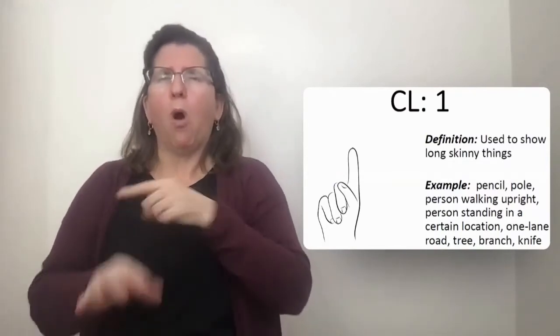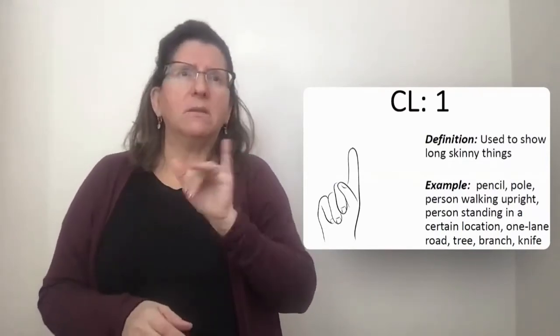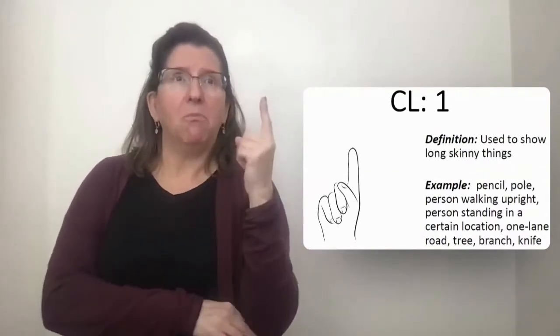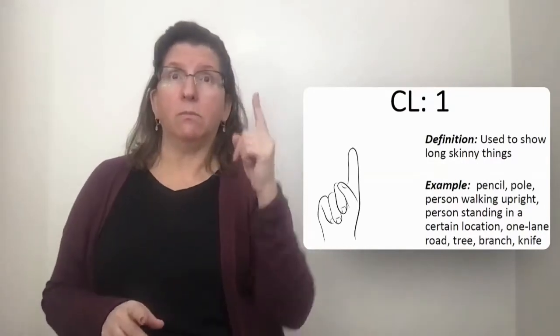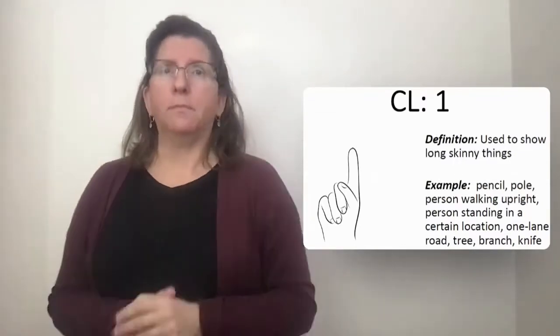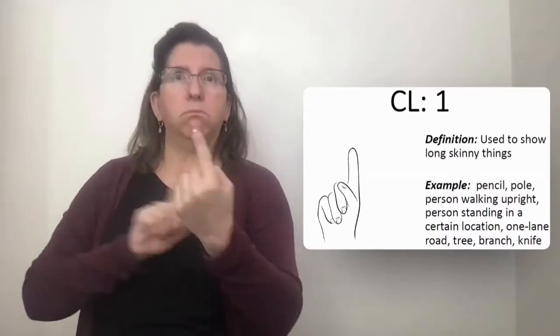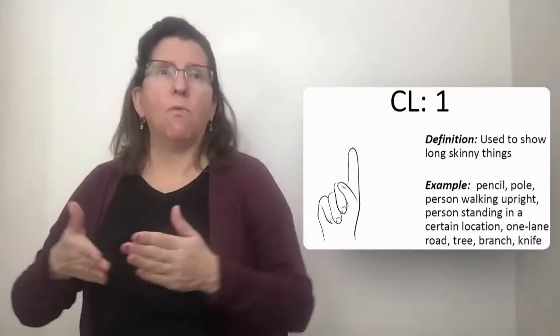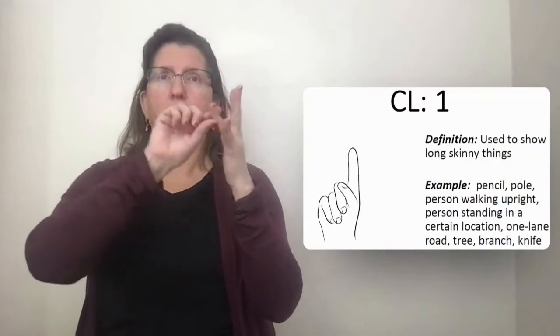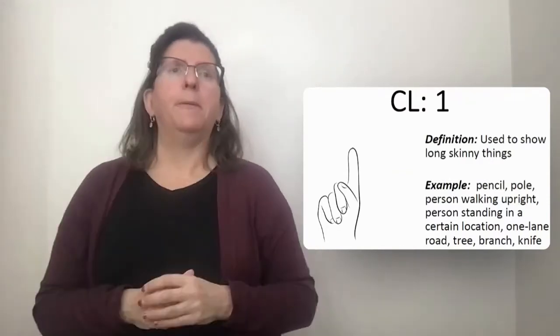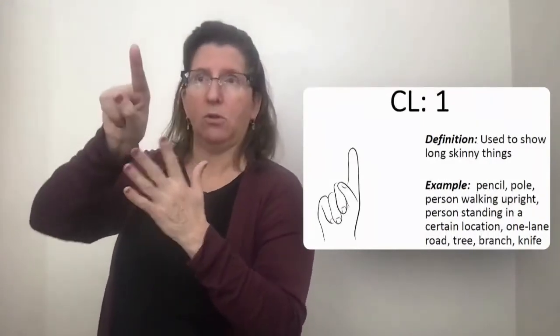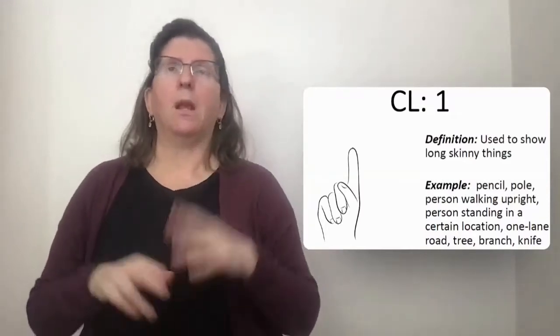Classifier 1, remember, represents something long and skinny like a pencil, a pole, a person walking upright, a person standing in a certain location, a one-lane street, a tree, a branch on a tree, and a knife.